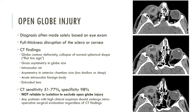An open globe injury is defined as a full thickness disruption of the sclera or cornea of the eye. Prompt diagnosis and treatment are essential for optimal restoration of vision. Evaluation should always begin with an ocular exam, as the diagnosis can often be made solely based on clinical findings. Clinical signs include diffuse subconjunctival hemorrhage, an abnormally shallow or deep anterior chamber, hyphema, pupillary or iris defects, or low intraocular pressure. If there are obvious signs of globe rupture on clinical exam, measurement of intraocular pressure is contraindicated.